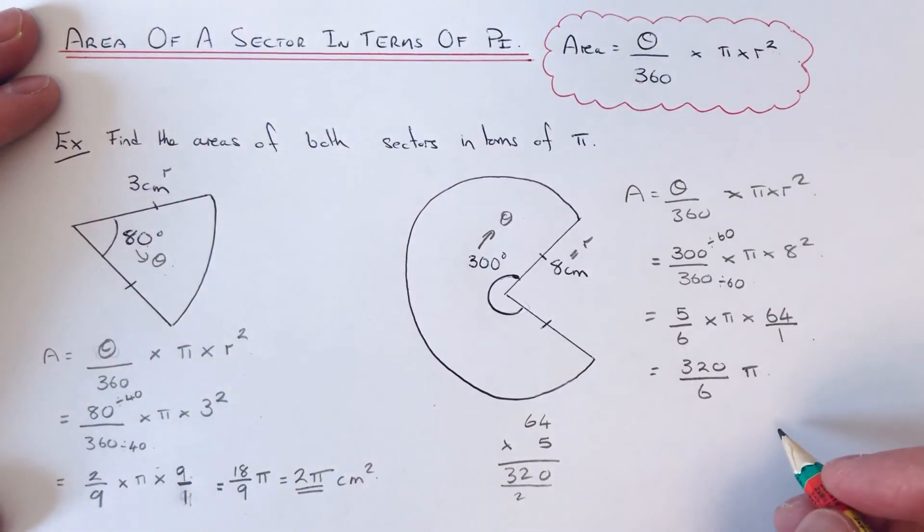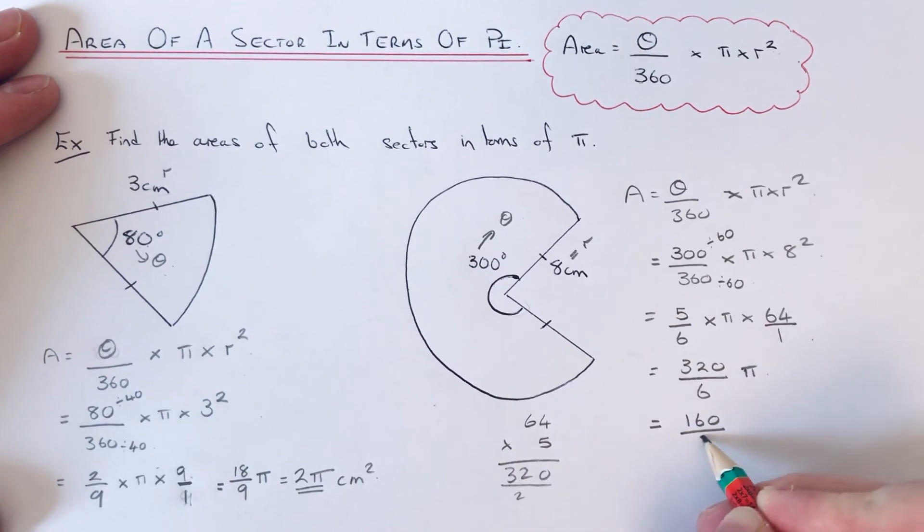And then I think this one cancels down again. We can definitely divide it by 2. That gives us 160 over 3.